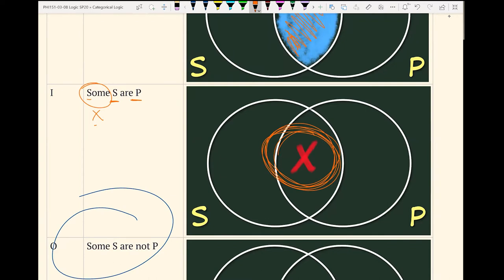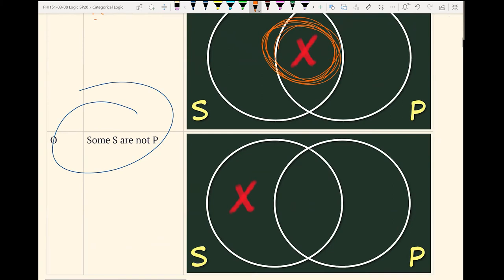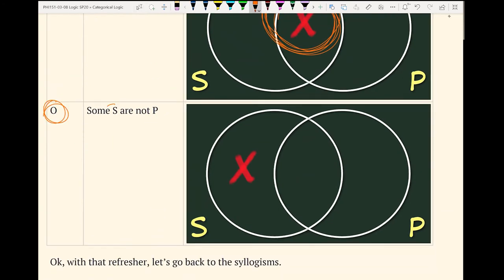Finally, we have our last class of statement, and that's O. And we want to say that there exists an S somewhere that is outside of all the P's. So we just put it out here and we use an X. With that refresher, let's turn to syllogisms.